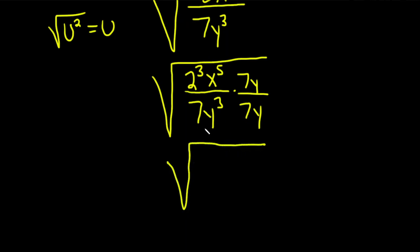Okay, so we'll have 2 cubed times 7, x to the fifth y. That's the numerator. On the bottom we'll have 7 squared. And then y cubed times y is y to the fourth. But that's really y squared squared.